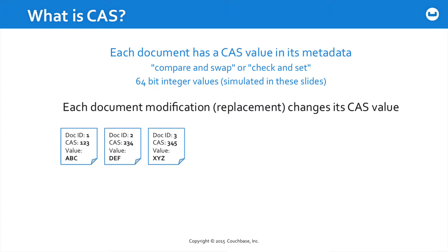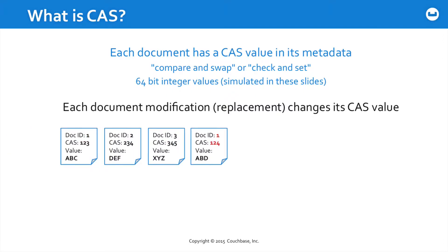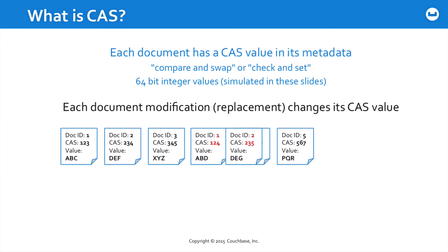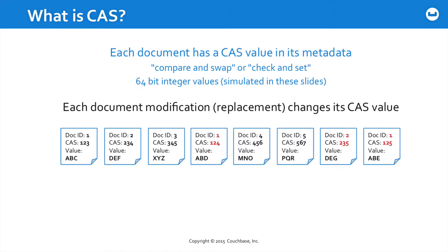If we had doc IDs 1, 2, and 3 with some initial CAS value, and then doc ID 1 was replaced and updated with a different value, the new document has the same document ID but a different CAS value. With each replacement of a document, the CAS value changes.